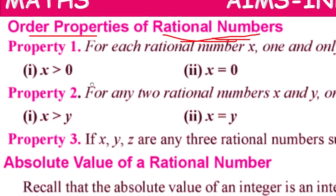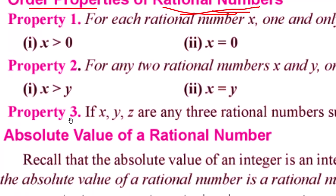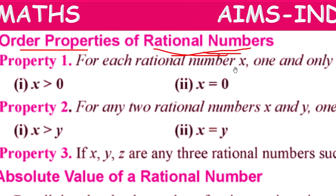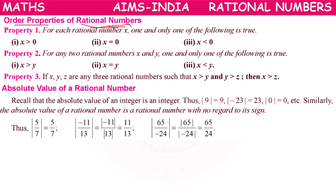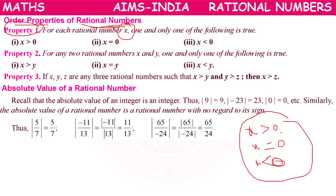Regarding rational numbers, we have some properties. Property 1, Property 2, Property 3 — three properties are there. For each rational number x, one and only one of the following is true: it may be greater than 0, or it may be equal to 0, or it may be less than 0. Out of these three conditions, only one condition will be applicable for a given rational number. So this is Property 1 in order properties.